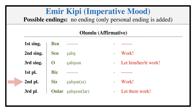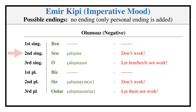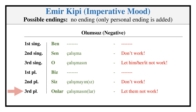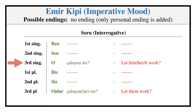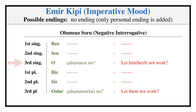Imperative Mood: ÇALIŞMA, ÇALIŞMAYANA, ÇALIŞMAYAR. Interrogative: ÇALIŞMASIN MÜ, ÇALIŞSINLAR MÜ, ÇALIŞMASIN MÜ, ÇALIŞMASINLAR MÜ?